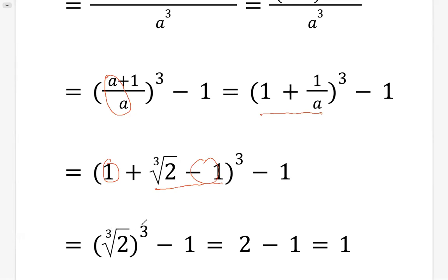We have cubic root of 2, then raised by 3. Now those 2 just cancel each other. Because 3 over 3 equals 1, that's 2 raised by 1. 2 raised by 1 minus 1, that's 1.